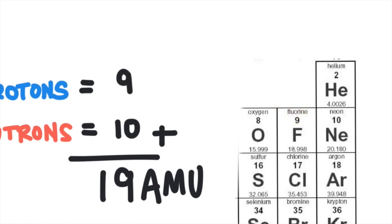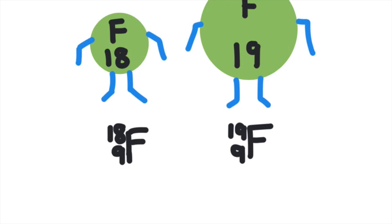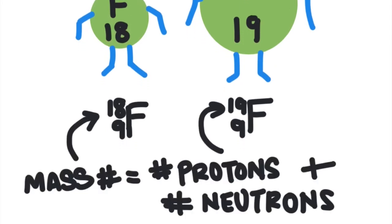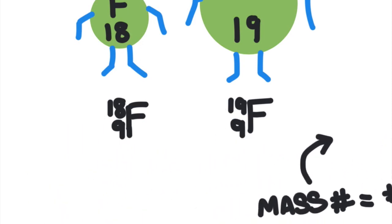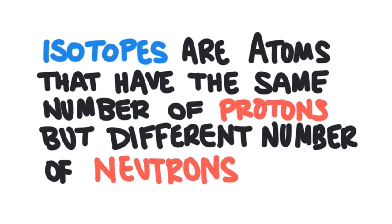There are different kinds of fluorine. There is fluorine with a mass of 18 AMU and fluorine with a mass of 19 AMU. How can these atoms both be fluorine but have different masses? For an atom to be fluorine, it must have 9 protons because the atomic number of fluorine is 9, but the number of neutrons can vary. The number of protons plus the number of neutrons determines the mass of the atom — we call this the mass number. Fluorine with a mass number of 19 has 10 neutrons; fluorine with a mass number of 18 has 9 neutrons (18 minus 9 equals 9). Atoms that have the same number of protons but different numbers of neutrons are called isotopes, so fluorine-19 and fluorine-18 are isotopes.